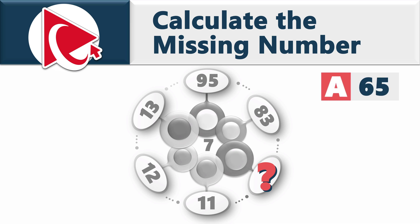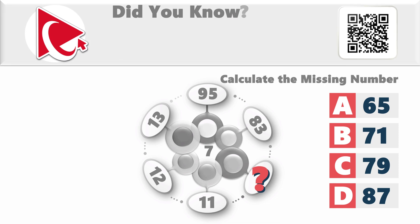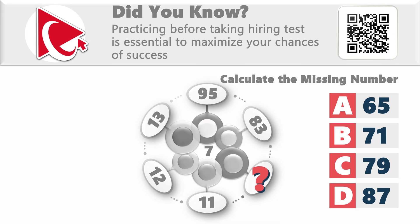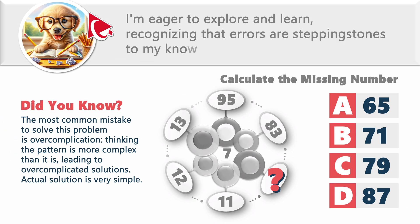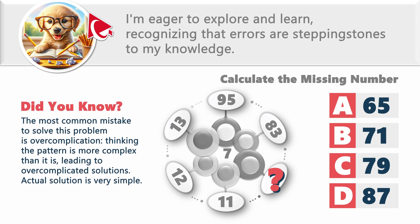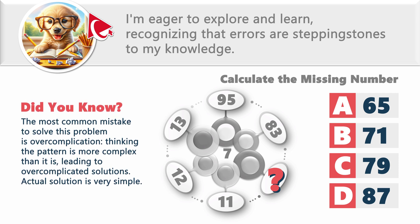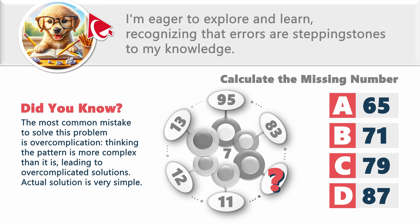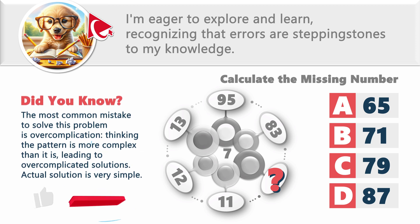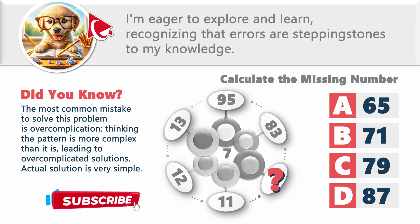Choice A, 65. Choice B, 71. Choice C, 79. And choice D, 87. Keep in mind that this question might seem challenging at first. But learning through trying and making mistakes is the only way. Only when you actively engage in attempting to do something new or challenging, you learn and find the answers. We encourage and embrace mistakes on this channel. Did you know that when you make mistakes, you gain insights and understand what doesn't work, which guides your future attempts? This hands-on experience and the lessons learned from errors are crucial for you mastering new skills and knowledge.